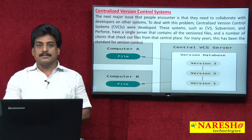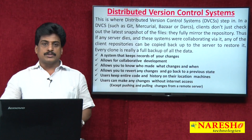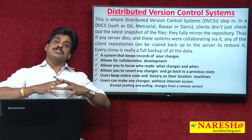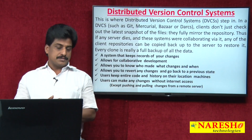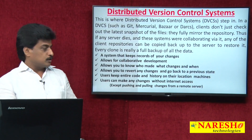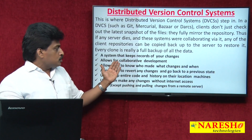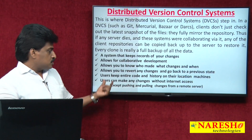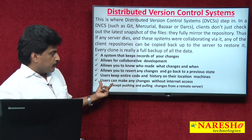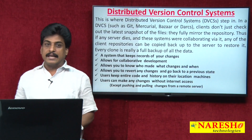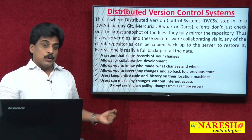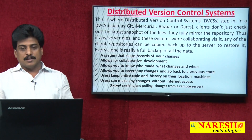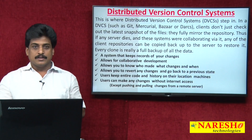With a Distributed VCS, work can be done between multiple members across several locations, irrespective of distance, through the internet — and even without an internet connection. It keeps records of your changes, allows collaborative development, lets you know what changes were made and when, and allows you to revert any changes. Users can make changes without internet access, though they cannot push or pull to a central server without connectivity.